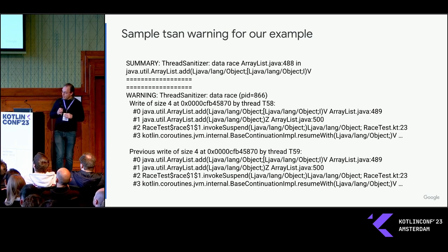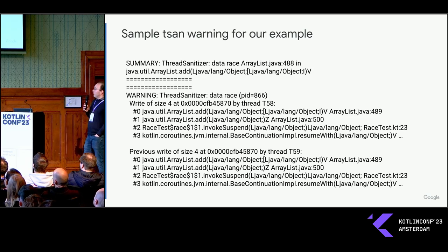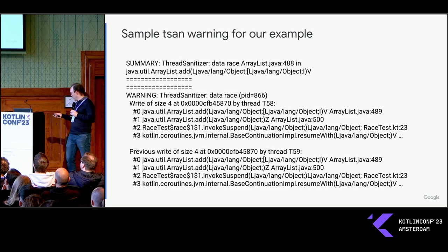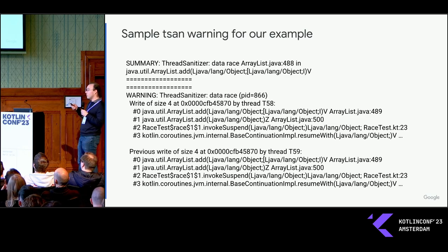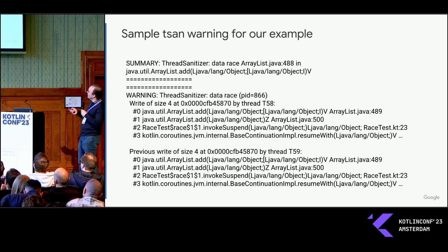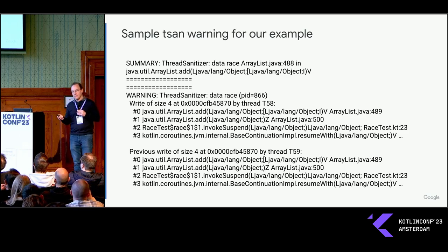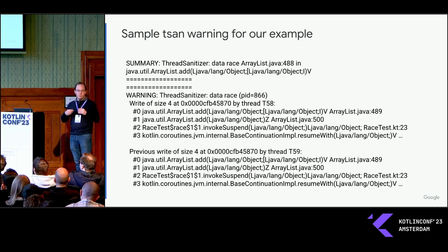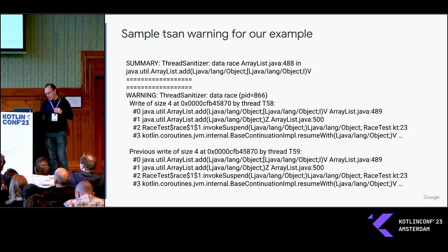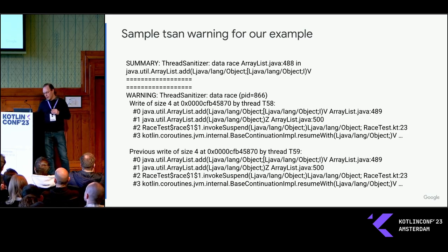For our example, the output looks something like this. You get stack traces of the racy threads. It's saying there's one thread that wrote to a particular location in ArrayList — that makes sense because we know our race is in ArrayList. This is the line of code I showed, inside the launch block where we were adding something to the list. Then there was another write by a different thread to the same location. Again, if you think back to the code, it's just 10,000 coroutines doing the same thing. They both wrote to the same memory location, and there was no synchronization in between. That's sort of how it finds these races, and it actually flags the other ones in that program as well.